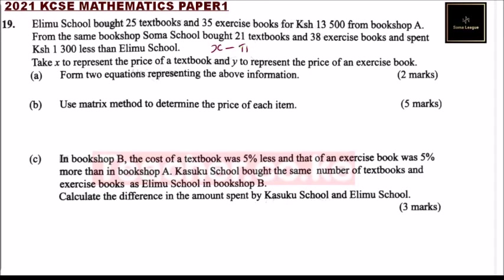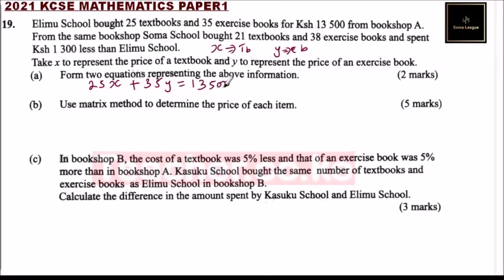So x represents the textbook price and y the exercise book price. Going back to the question, we can see that Erimu bought 25 textbooks, so this means we have 25x plus 35 exercise books, 35y. The number of textbooks multiplied by the price plus number of exercise books multiplied by the price should add up to 13,500.